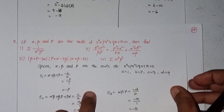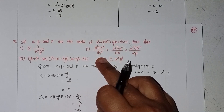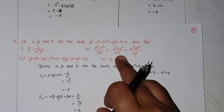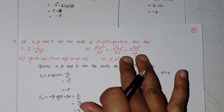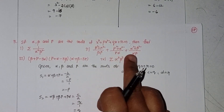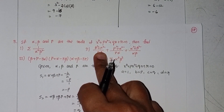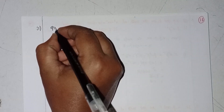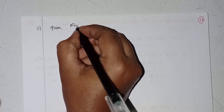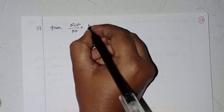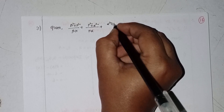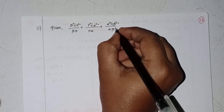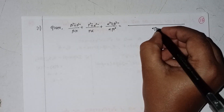For the second part: summation of (β²+γ²)/(βγ) + (γ²+α²)/(γα) + (α²+β²)/(αβ). Taking LCM = αβγ, we set up the combined fraction.